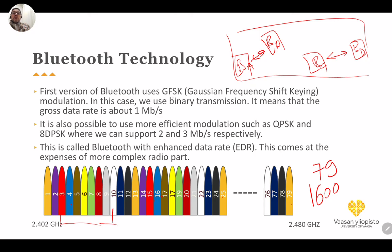The first version of Bluetooth used Gaussian Frequency Shift Keying (GFSK), similar to the modulation used in GSM, with a data rate of about 1 Mbps. Newer versions can also use Quadrature Phase Shift Keying (QPSK) sending 2 bits per symbol, or 8 Differential Phase Shift Keying (8DPSK) sending 3 bits per symbol. This increases the data rate from 1 up to 3 Mbps, called Enhanced Data Rate (EDR) Bluetooth.